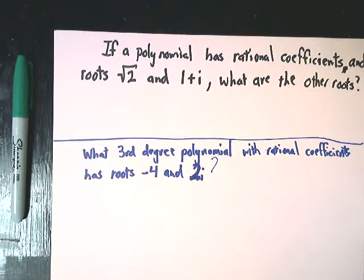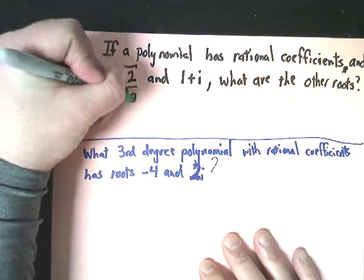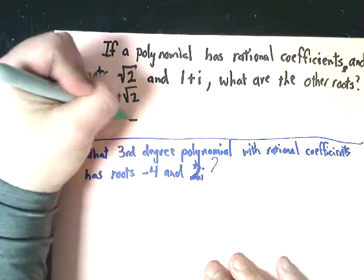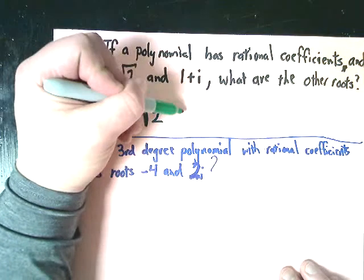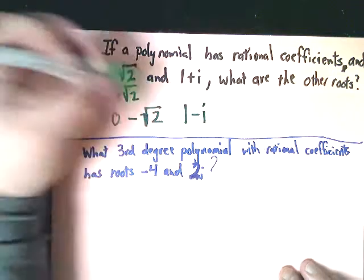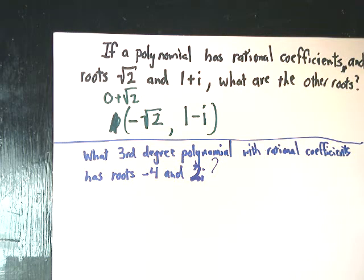If a polynomial has rational coefficients and has roots of √2 and 1 + i, what are the other roots? Well, since it has rational coefficients, if I have √2 — which is really 0 + √2 — I also need the negative version: 0 - √2, or just -√2. Similarly, since I have 1 + i, I also need 1 - i. So the other roots are -√2 and 1 - i.